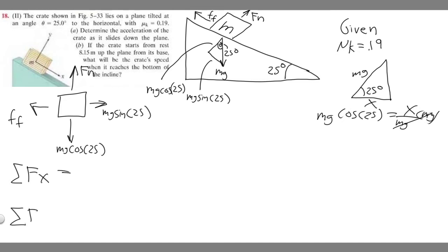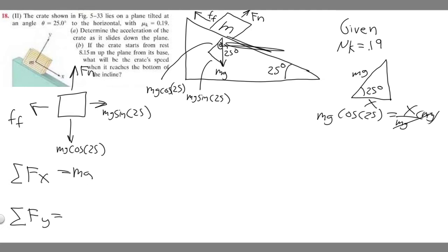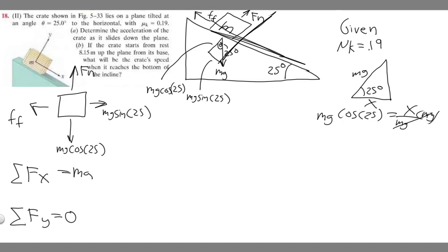Now we find the sum of forces in each direction. The sum of forces in the x-direction equals ma, because the crate accelerates down the slope. In the y-direction, the sum equals zero, because the crate doesn't move perpendicular to the surface — acceleration in y is zero.